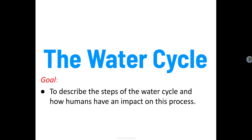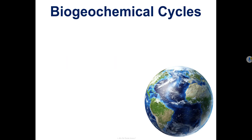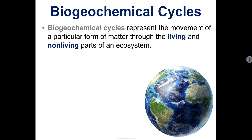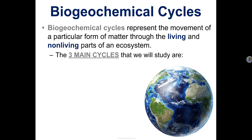Today we'll be talking about biogeochemical cycles, specifically the water cycle. The goal of this video is to describe the steps of the water cycle and explain how humans have an impact on this process. A biogeochemical cycle is a cycle that represents the movement of a particular form of matter through the living and non-living parts of an ecosystem. There are three main cycles we will study: the water cycle, carbon cycle, and nitrogen cycle.